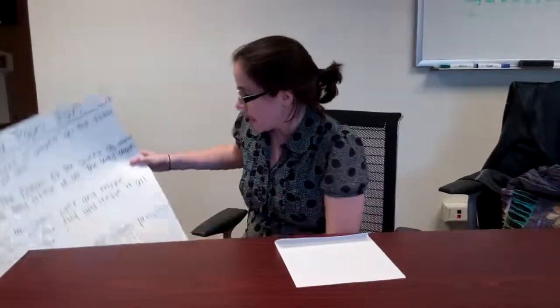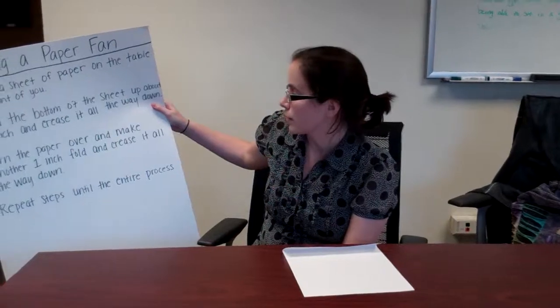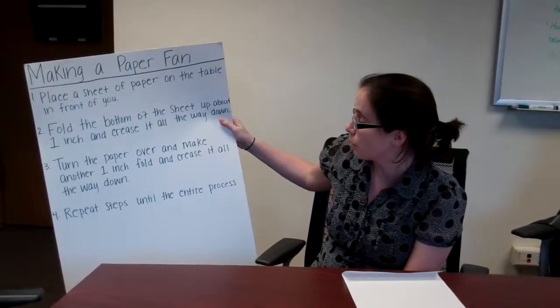So the third step says, turn the paper over and make another one inch fold and crease it all the way down. So this is my favorite part of making a paper fan. You go like this, you go, kiss the table. So that's how you remember, when you make a fold, then you turn it over and kiss the table. Okay, so now I'm going to make another fold and I'm going to crease it.